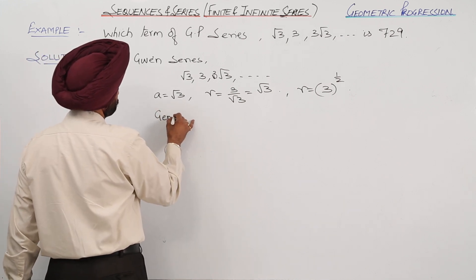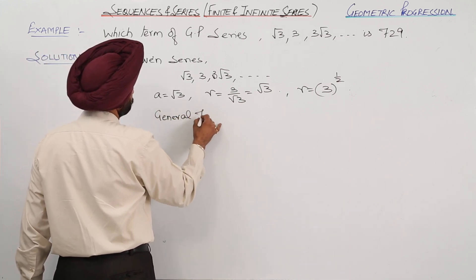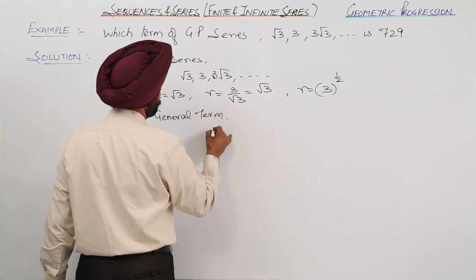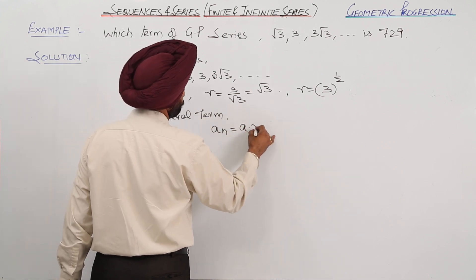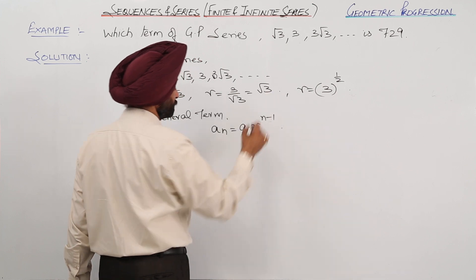General term formula is an = a · r^(n-1).